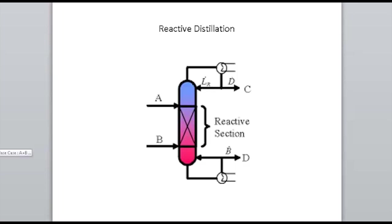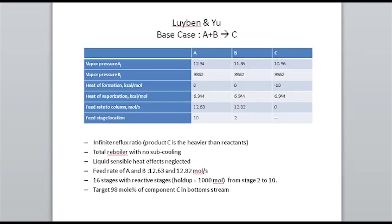The first example is just A plus B goes to C — a ternary system. C was the heavy component, so the top of the column was under infinite reflux with no product taken out the top. The goal under this example was to get 98 mole percent of product C out the bottom.